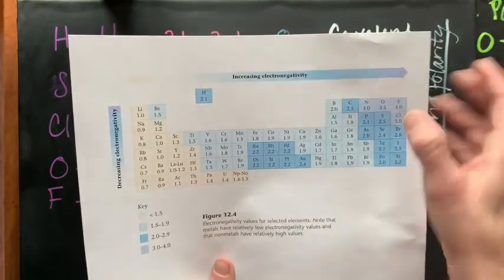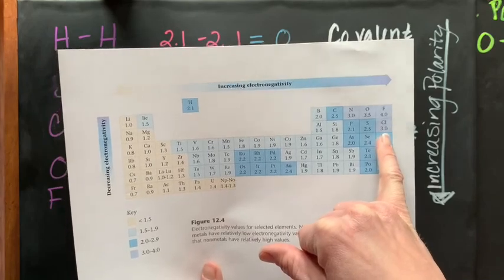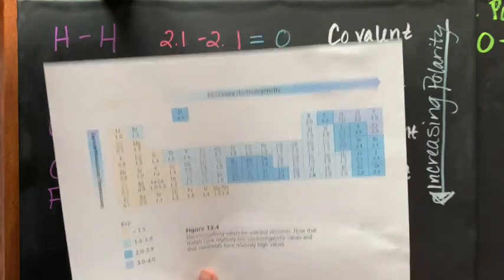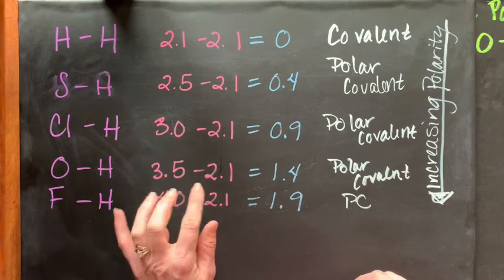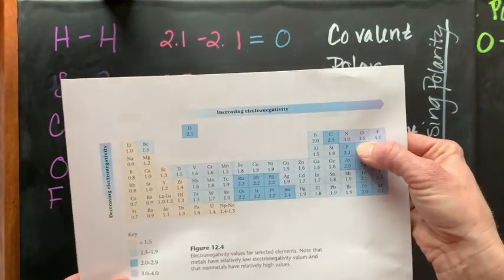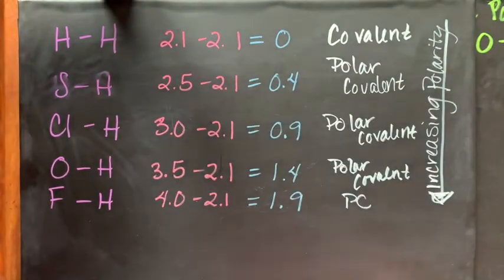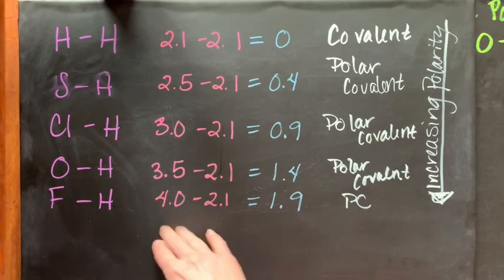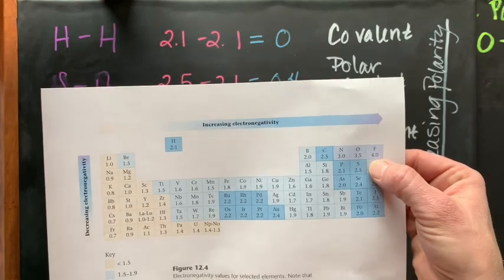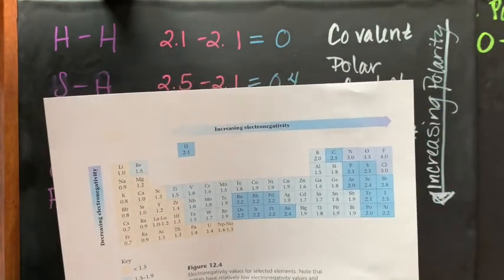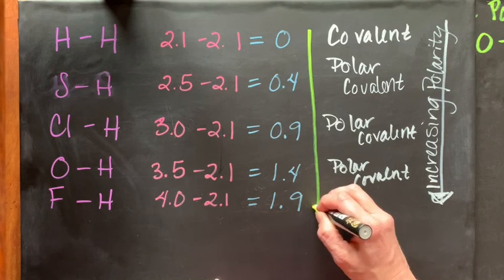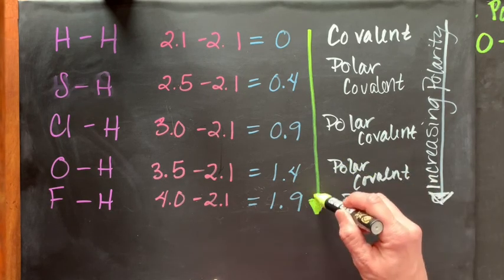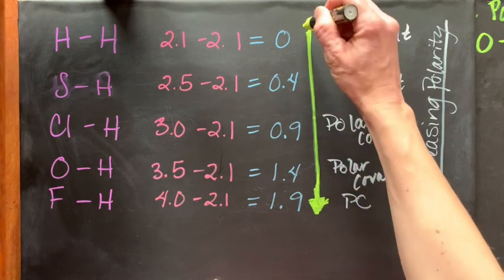For chlorine and hydrogen: chlorine is 3.0, minus 2.1 equals 0.9 — polar covalent. For hydrogen and oxygen: oxygen is 3.5, minus 2.1 equals 1.4 — polar covalent. For hydrogen and fluorine: fluorine is 4.0, minus 2.1 equals 1.9. These have already been arranged in terms of increasing polarity, from H2 as least polar up to H-F as most polar.